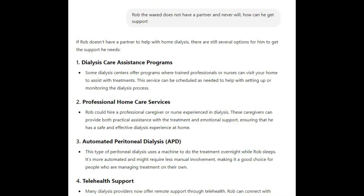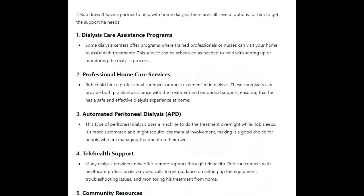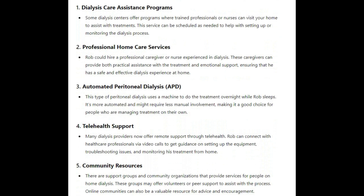If Rob doesn't have a partner to help with home dialysis, there are still several options for him to get the support he needs. One, dialysis care assistance programs: some dialysis centers offer programs where trained professionals or nurses can visit your home to assist with treatments, scheduled as needed to help with setup or monitoring. Two, professional home care services: Rob could hire a professional caregiver or nurse experienced in dialysis, providing both practical assistance and emotional support for a safe and effective dialysis experience at home.